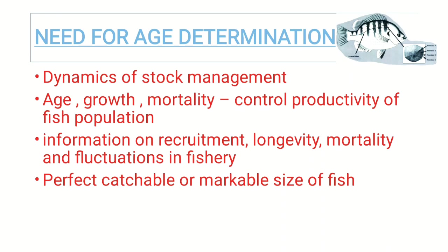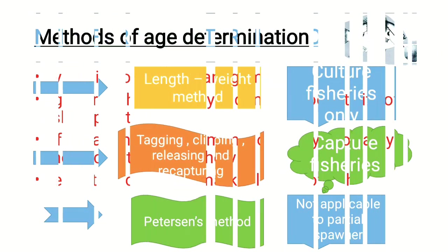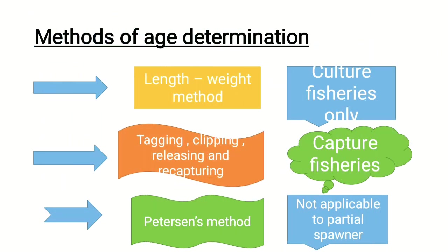The perfect catchable or marketable size of fish can also be determined once we know the age. To understand age, there are many methods. If we go to the traditional methods, the first was the length-weight relationship method.